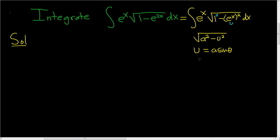So the substitution we're going to make is e to the x equals, and then a is 1, so we're just going to get e to the x equals sine of theta. Now we'll take the derivative of both sides. So on the left-hand side, we get e to the x dx, and on the right-hand side, we get cosine theta d theta.